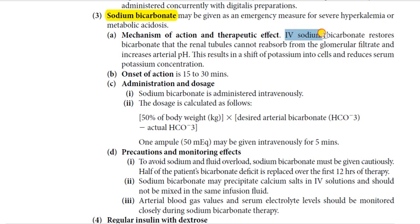IV sodium bicarbonate restores bicarbonate that the renal tubule cannot reabsorb from the glomerular filtrate and increases arterial pH. The bicarbonate is given to compensate for the reduced bicarbonate in the body and to increase blood pH. This also helps reverse hyperkalemia and reduces the serum potassium concentration.